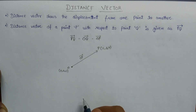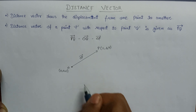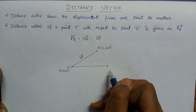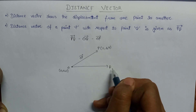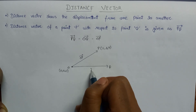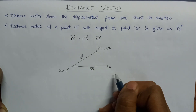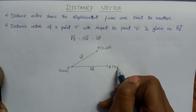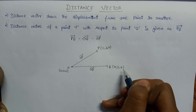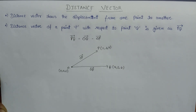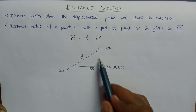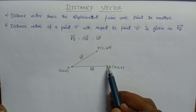Now let us consider one more position vector, that is OQ vector. This is Q and this is OQ vector. The coordinate of Q is 4, 5, 6. These are the two points between which we have to show the displacement.